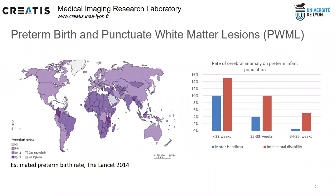About 15 million children are born prematurely each year, and this number is in constant increase. 18 to 35% of these preterm births will lead to brain anomalies, which can cause motor handicap as well as intellectual disability.